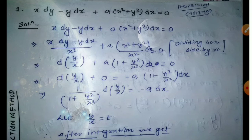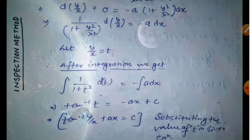The left-hand side we divided and brought over. We kept minus a dx on one side. For convenience, we let t = y/x. Then d(y/x) becomes dt. So now we integrate 1/(1 + t²) dt with respect to t, and also integrate a dx. We know the integration of 1/(1 + t²) dt is tan inverse t.